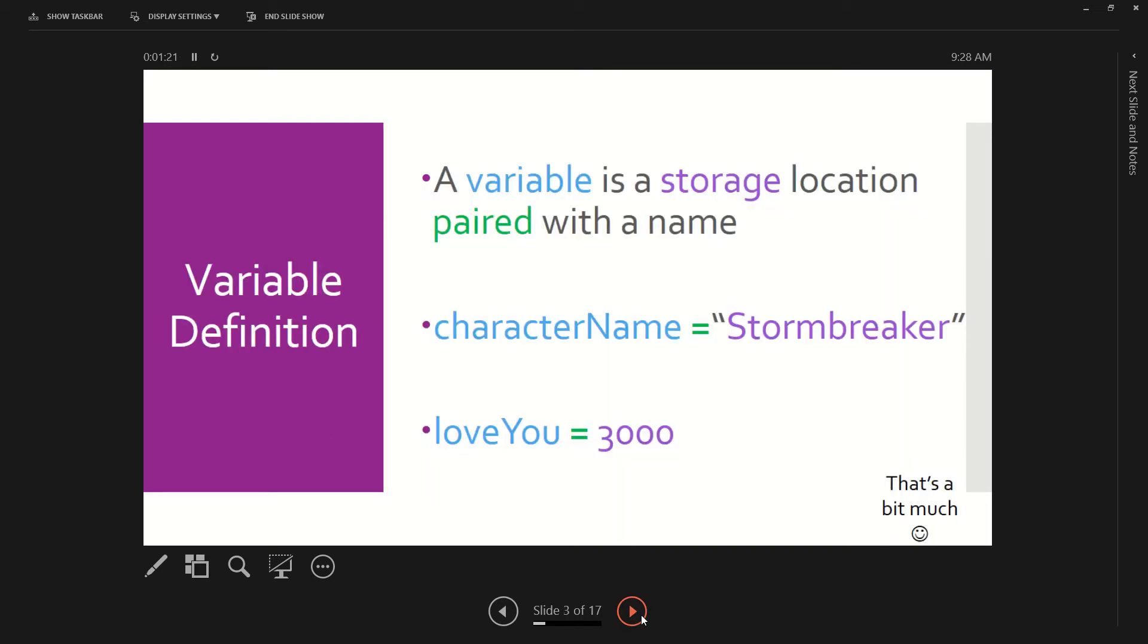So a very simple example of variables are listed here below. A variable definition is: a variable is a storage location paired with a name. So right here, characterName, that's where the value of Stormbreaker is stored. When we have this set up this way, characterName is now basically the same as Stormbreaker.